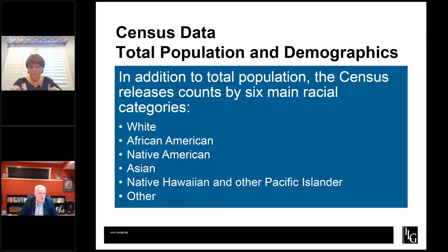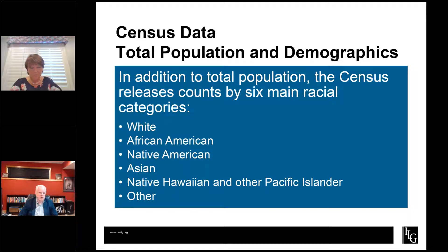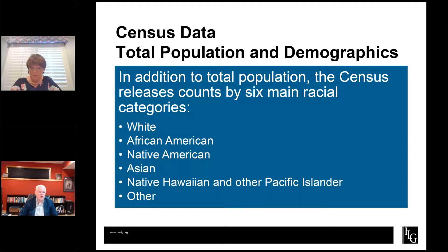What types of data does the census provide? The most important piece, in terms of getting low population deviation in districts, is just the total population. Within that, the census provides the option for people to select one of six different racial categories: white, African American, Native American, Asian or Pacific Islander, Native Hawaiian or other Pacific Islander, and other. In addition, people can choose more than one — they can check multiple categories. So the census reports all of these categories alone by themselves, or combinations of two through six of those categories, which is part of why raw census data has columns and columns of information.